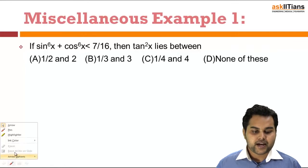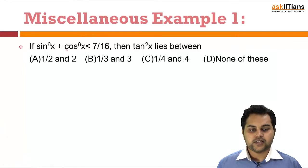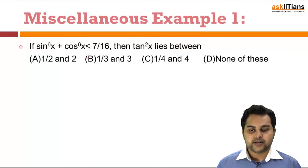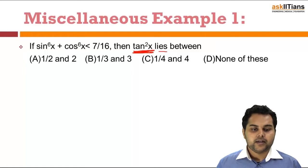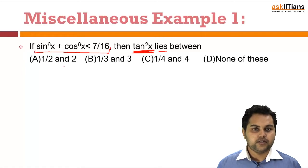The first example is: sin⁶x + cos⁶x < 7/16. Then I have to find the value of tan²x — specifically the range in which tan²x would lie, corresponding to x satisfying the condition sin⁶x + cos⁶x < 7/16.